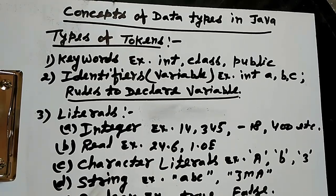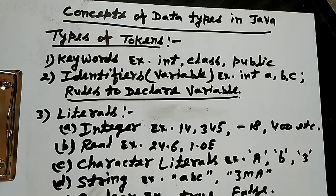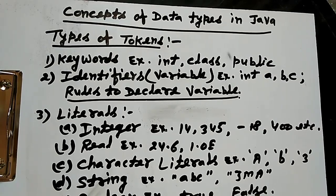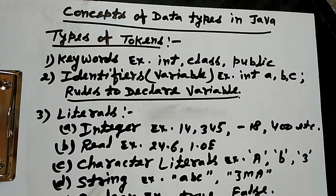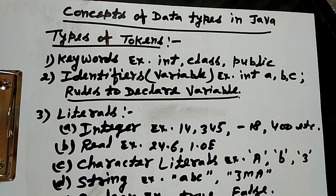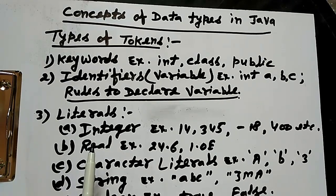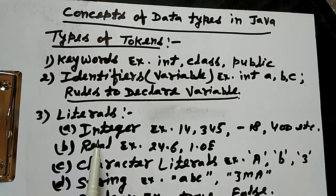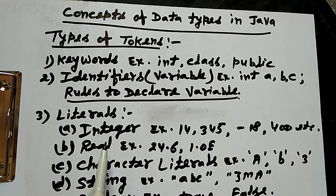Next one is token is literal. The value stored in the variables or the constant is called the literal. It is also many types.